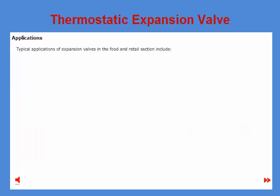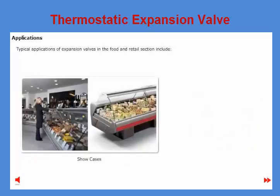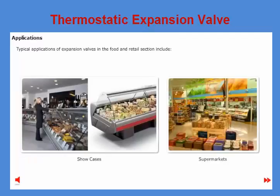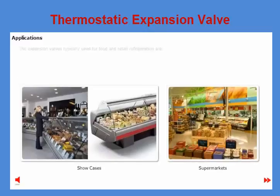Typical applications for expansion valves in the food and retail section include display cabinets for vegetables, fruit, and unpackaged meat and similar products, sales counters for various foods, and reach-in cold rooms for dairy products. The expansion valves typically used for food and retail refrigeration are T2, TE2, and TU.